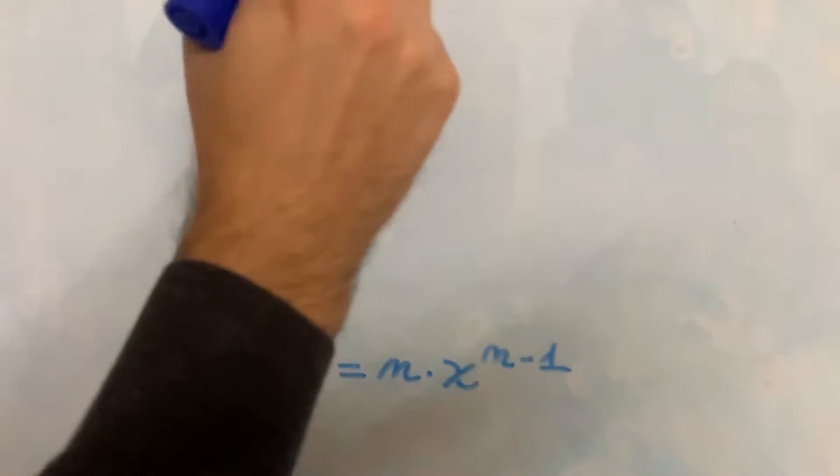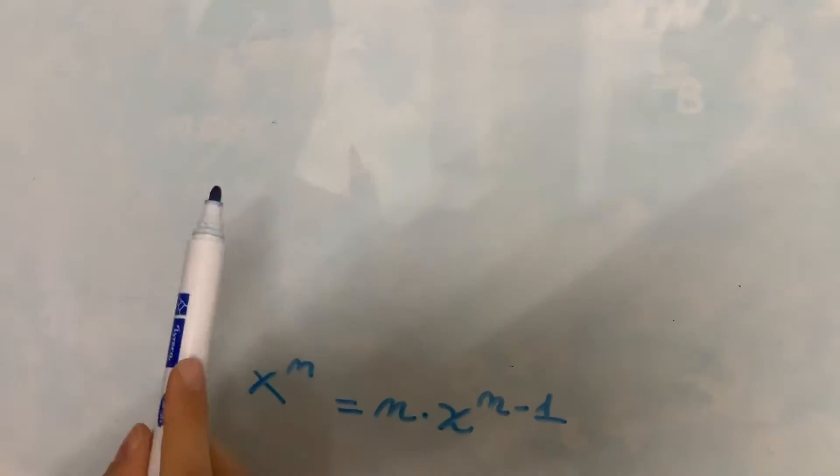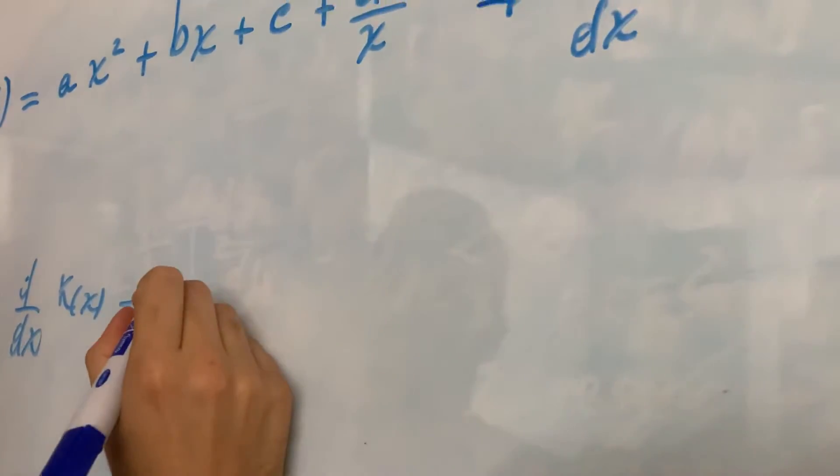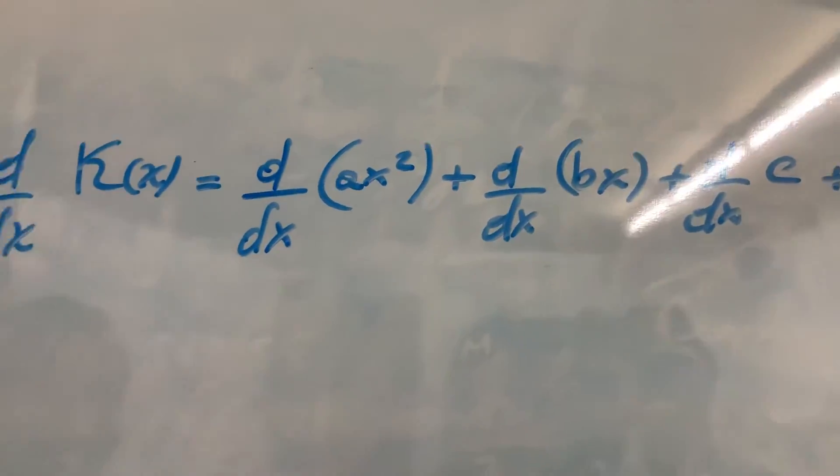So applying this rule here we have 2 times a, which is a constant, so it goes out of the derivative, times the derivative of x.